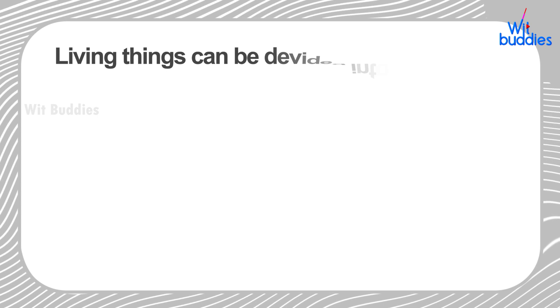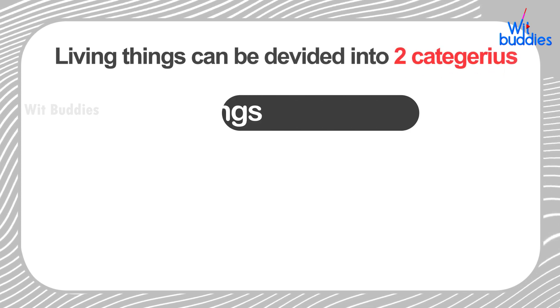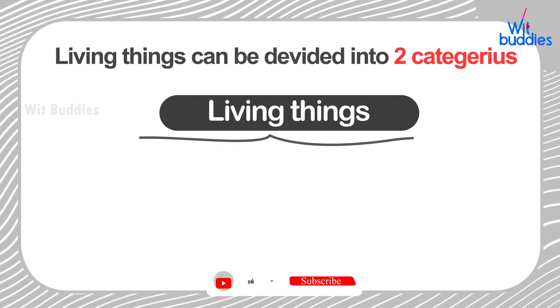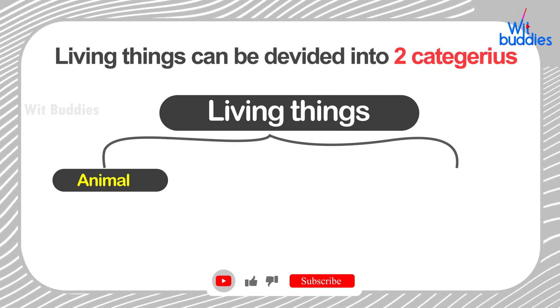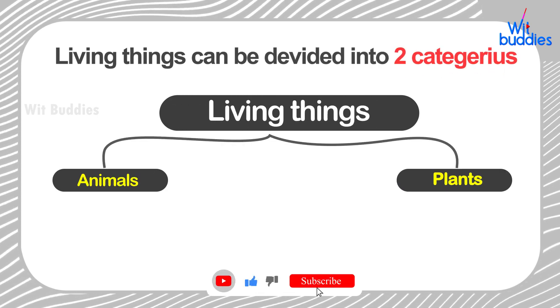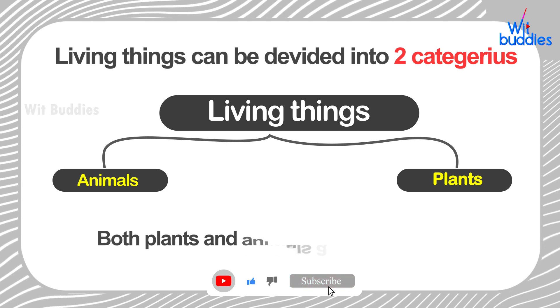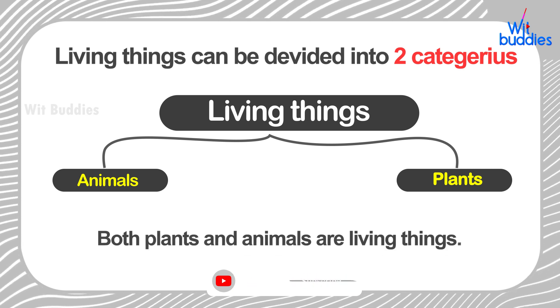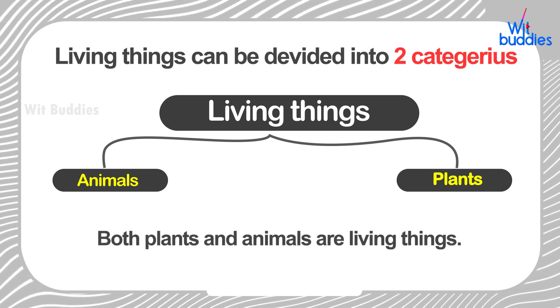Living things can be divided into two categories: Animals and Plants. Both plants and animals are living things.